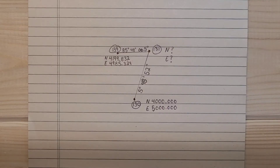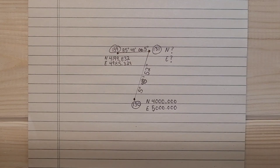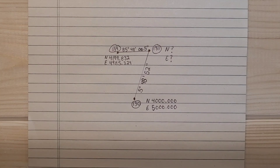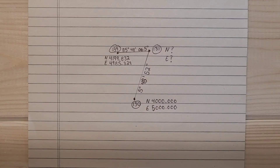Here we have two known points — point 130 and point 139. We have the northing, easting, and azimuths for both of those, and we are after the northing and easting of point 131. That point is where those two lines intersect. It does not matter what order the coordinates are entered — you don't have to enter them in clockwise or counterclockwise order. Make sure to enter the azimuths and not the bearings, and the azimuths entered need to be to the right of the point.